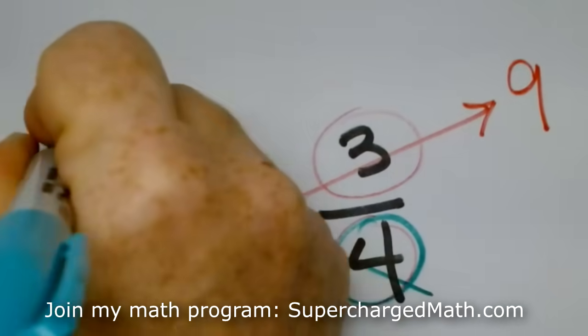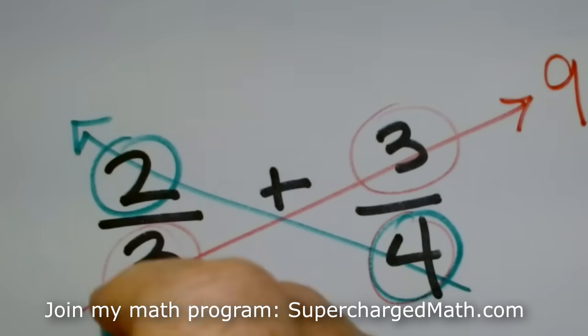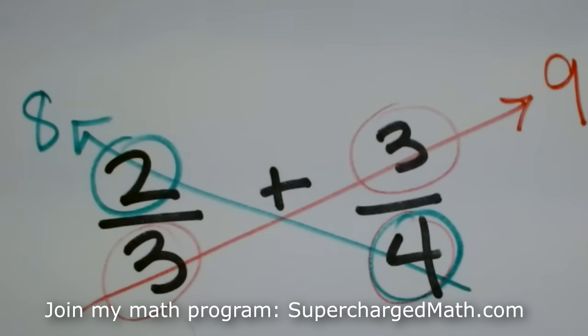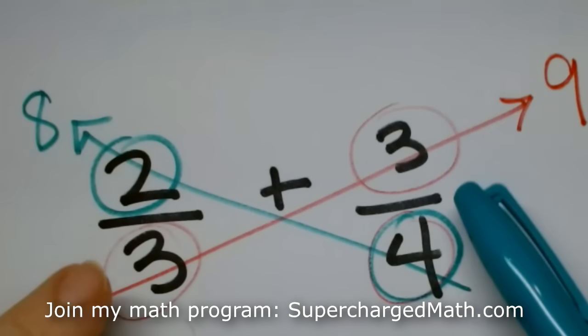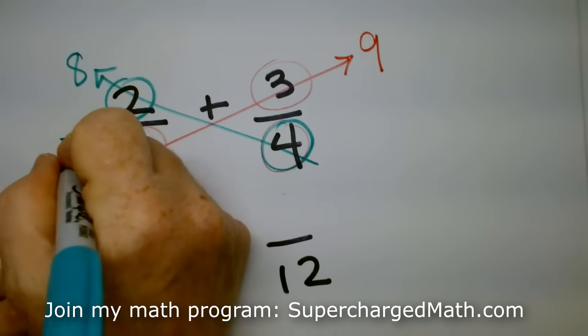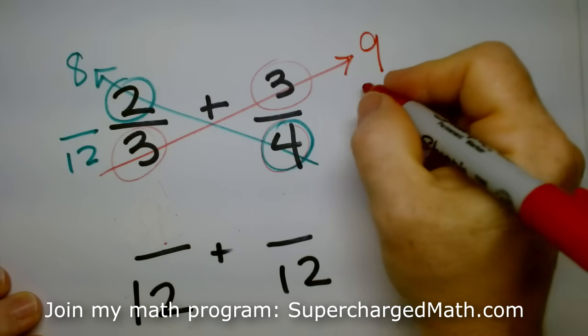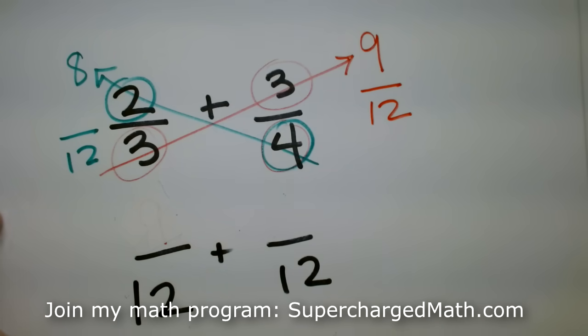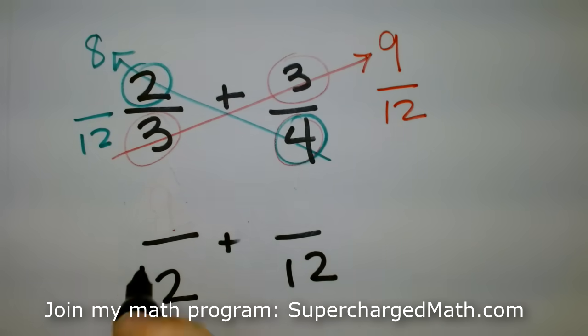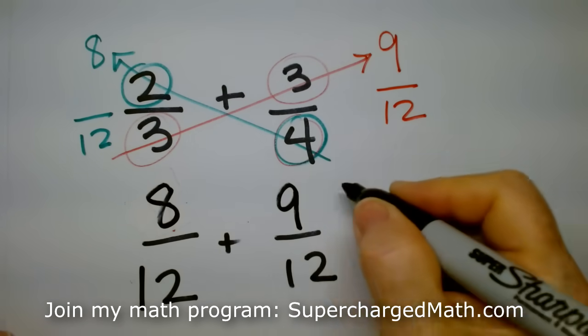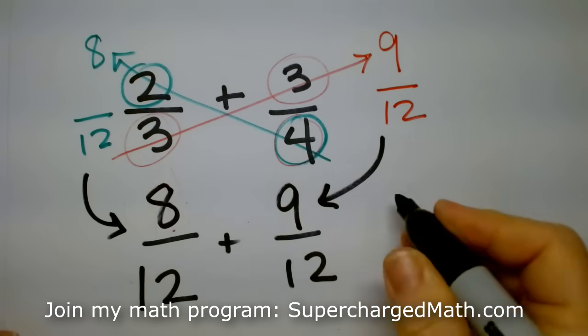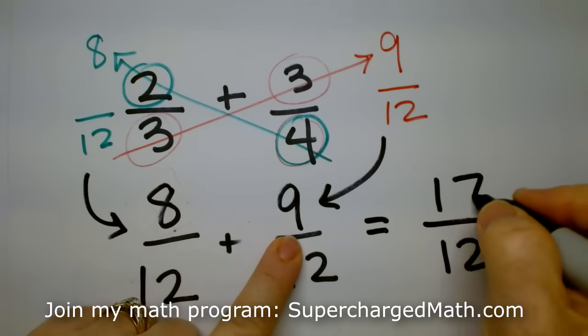This is an eight. So what did we just do? We scaled up each one. So this is eight over twelve. This one is nine over twelve. And this is my eight. And there's my nine. And then eight plus nine is seventeen.